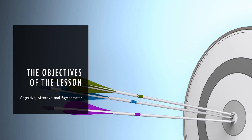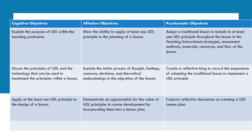Three types of objectives were used in writing the lesson plan: the cognitive, affective, and psychomotor. These objectives were provided to guide the learning process and determine student expectations. There were nine objectives utilized in the lesson plan — three objectives for each type of objective outlined.